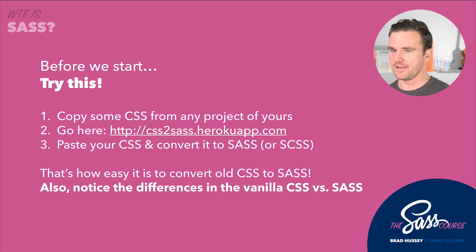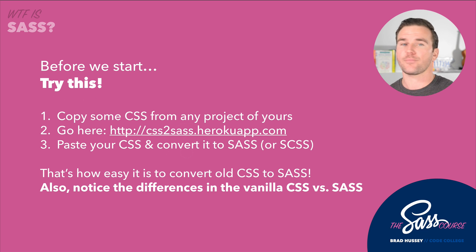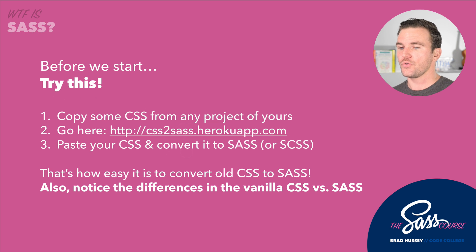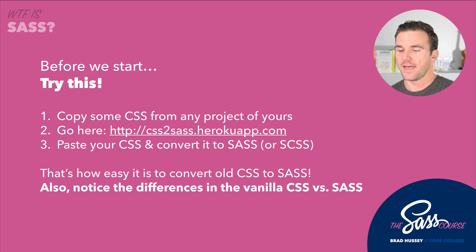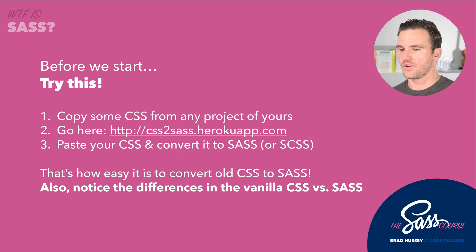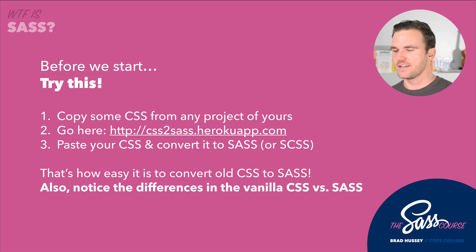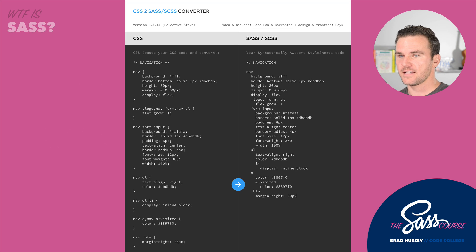Before we start, I want you to try something. Grab any CSS from any project of yours — any project lying around. If you have any CSS, just copy it and go to this website, css2sas.herokuapp.com, and paste your CSS and convert it to SAS or SCSS. And that's how easy it is to convert old CSS to SAS. I just wanted to do this to show you and allow you to notice the difference in vanilla CSS and SAS.